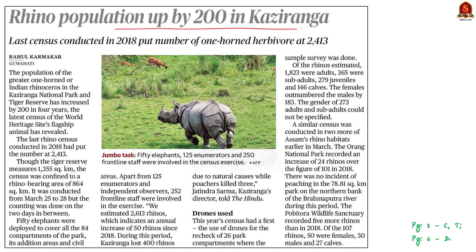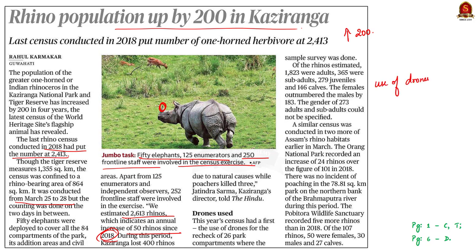The next article states that the population of the Greater One-Horned Rhino in Kaziranga National Park and Tiger Reserve has increased by 200 in four years. The recent census was conducted from March 25th to 28th, involving 50 elephants, 125 enumerators and independent observers, and 252 frontline staff. The census estimated 2,613 rhinos, indicating an annual increase of 50 rhinos since 2018. The last rhino census conducted in 2018 had put the number at 2,413. This recent census is significant because it involved the use of drones for the first time.